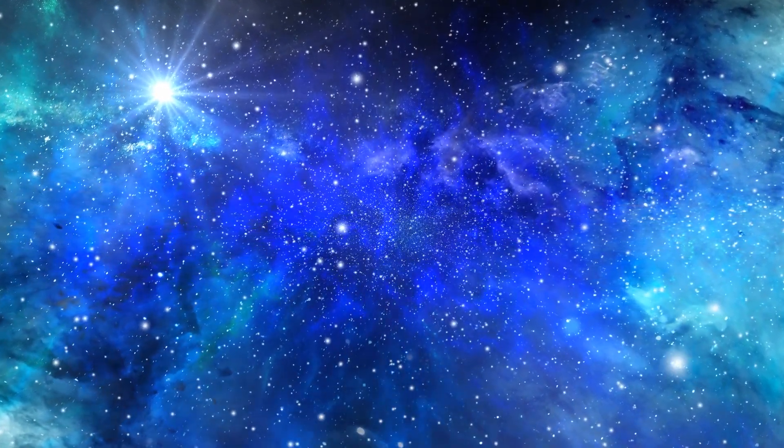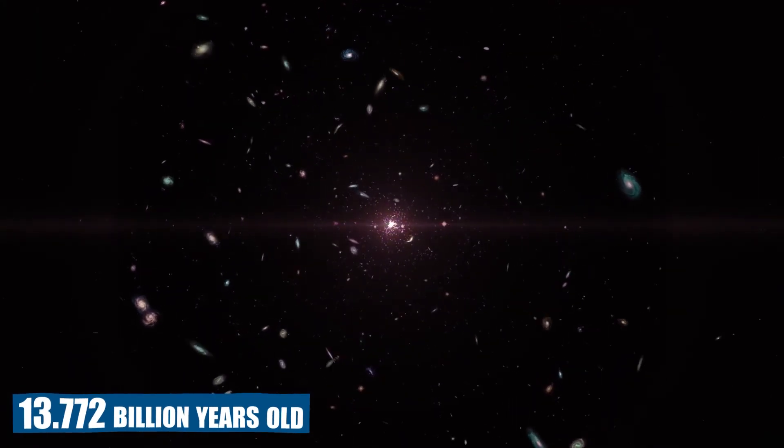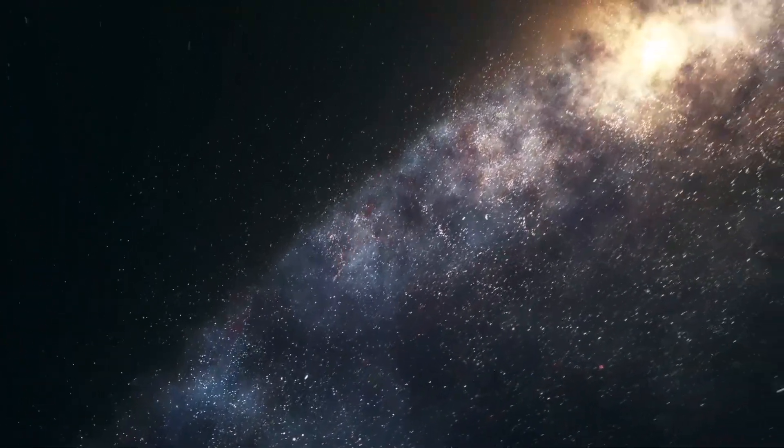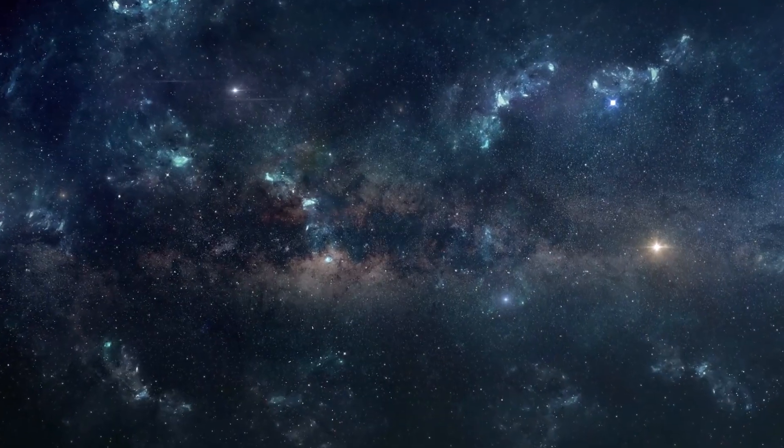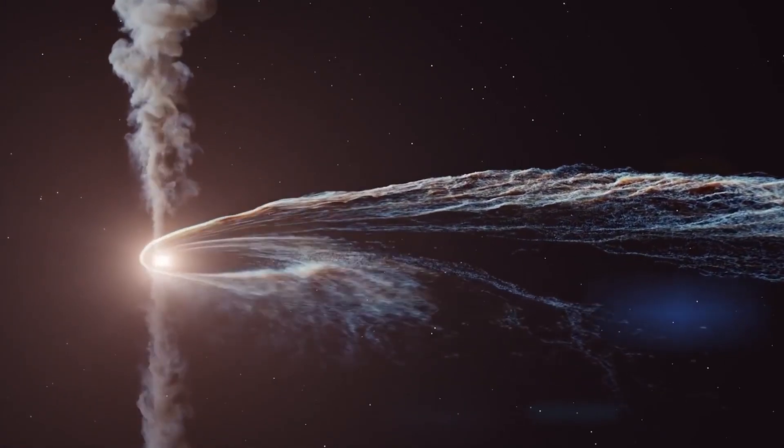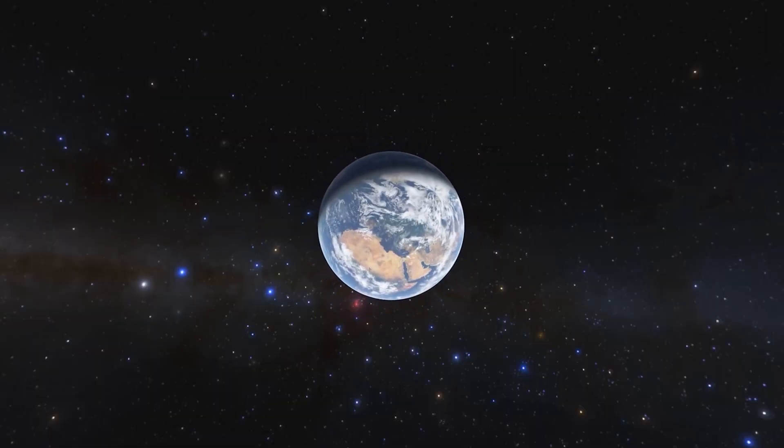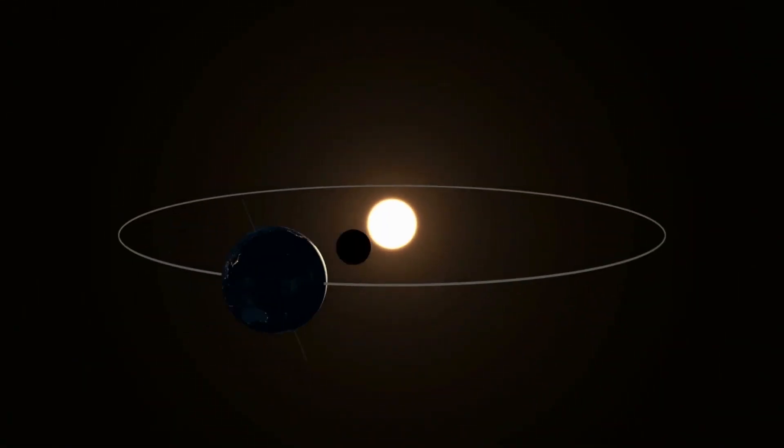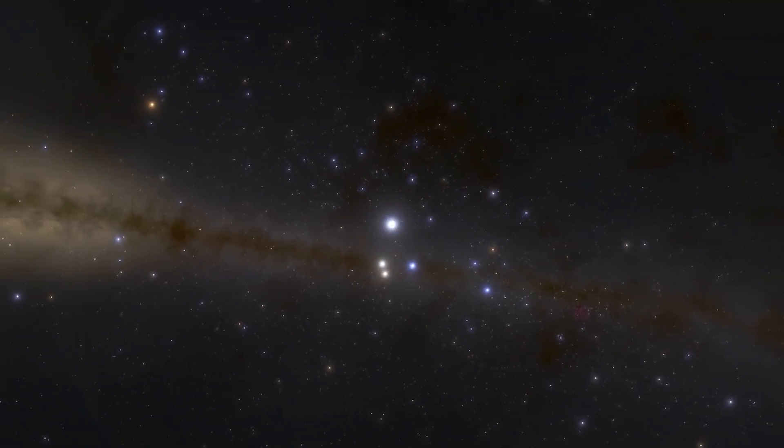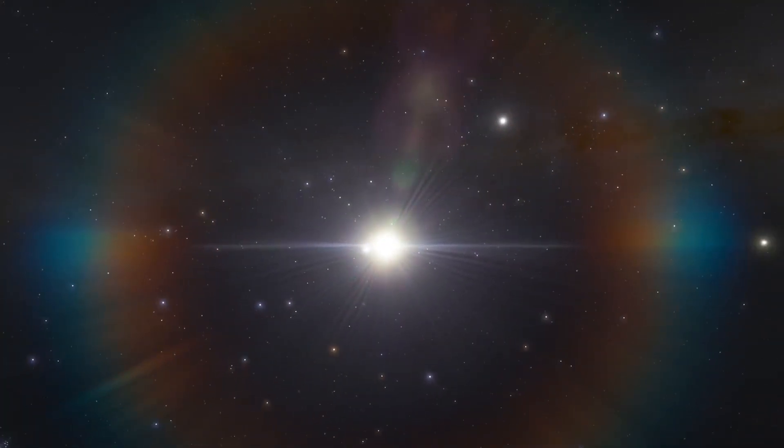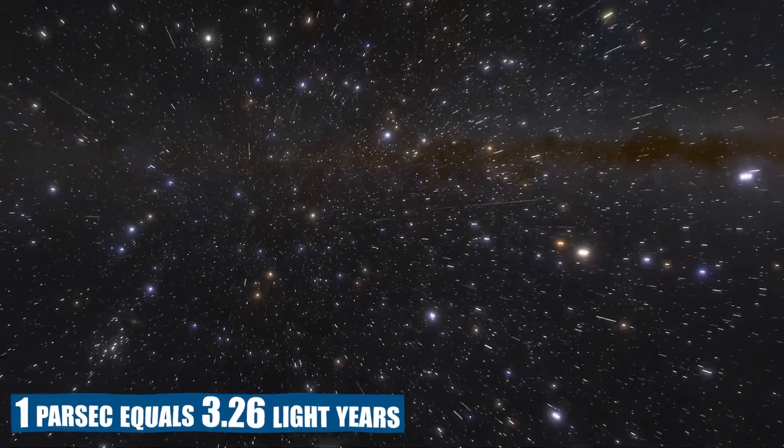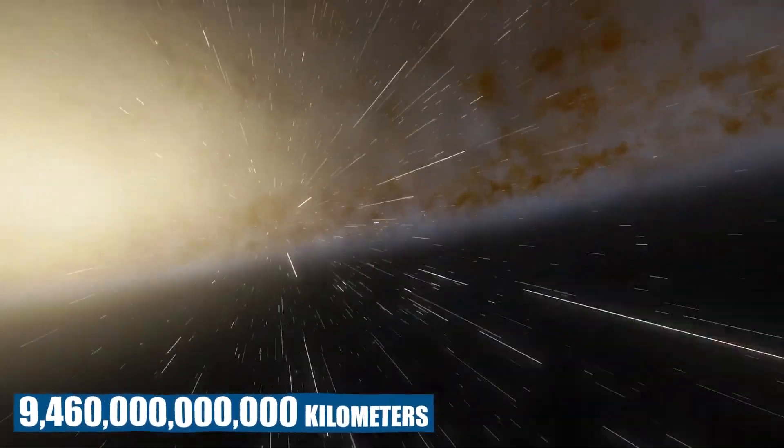According to estimates, our universe is 13.772 billion years old. How vast is the universe in actuality? Its width is currently estimated by scientists to be 28.5 gigaparsecs. A basic understanding of astronomical units is necessary to comprehend how enormous that number is. The size of a parsec - you must first understand when an astronomical unit or AU is in order to comprehend how a parsec is defined. In essence, one AU corresponds to the 150 million kilometer average distance between the Sun and the Earth. In other words, a parsec is the length of a triangle whose shortest side is one AU and whose opposite vertex subtends an angle of one arc second. If you continue your calculations, you will discover that one parsec equals 3.26 light-years, or the approximate 9.46 trillion kilometers that light travels in a year.